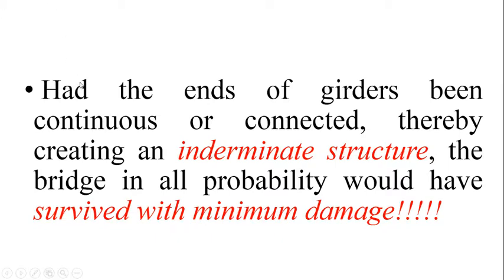Very importantly, had the ends of the girders been continuous or connected, that is if the structure would have been indeterminate, then the bridge in all probability would have survived with minimum damage. Since each span was simply supported, that is determinate, therefore the bridge collapsed.